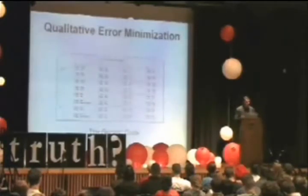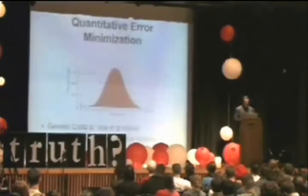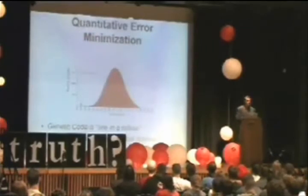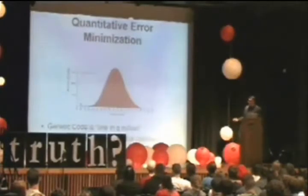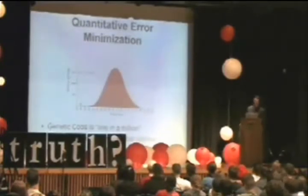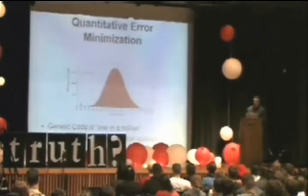This looks like there's an elegant set of rules that define the code. A few years ago, a team of scientists quantified the error minimization capacity of the code, and they showed, compared to 10 to the 18 randomly generated genetic codes, that the code in nature is highly anomalous — highly unusual, an outlier. The distribution of error minimization capacities of the random codes shows that the code found in nature has a much lower number, meaning better error minimization capacity. This code seems to be optimized or fine-tuned to minimize error.